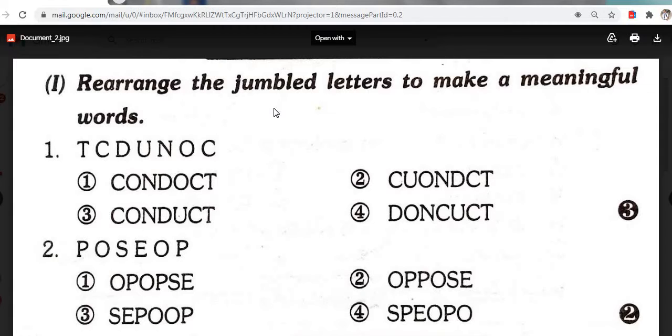Rearrange the jumbled letters to make a meaningful word. First, T-C-B-U-N-O-C. We have to rearrange these letters and find which word is meaningful. First is conduct. Option 3. Conduct means to carry. Then, second question. P-O-S-C-O-P. Answer for this is oppose.